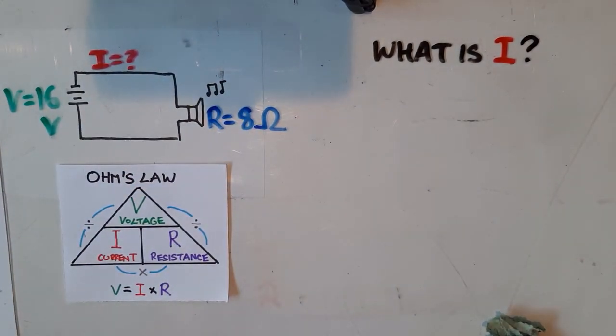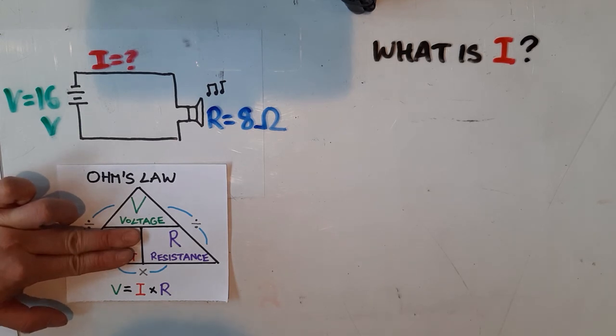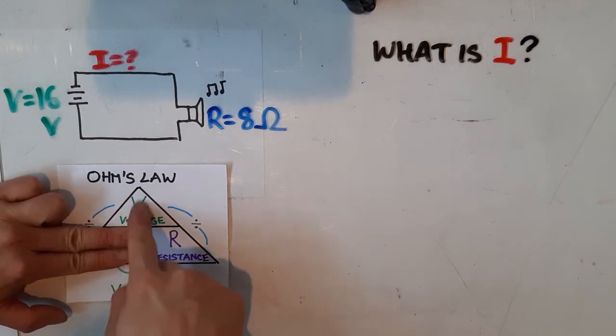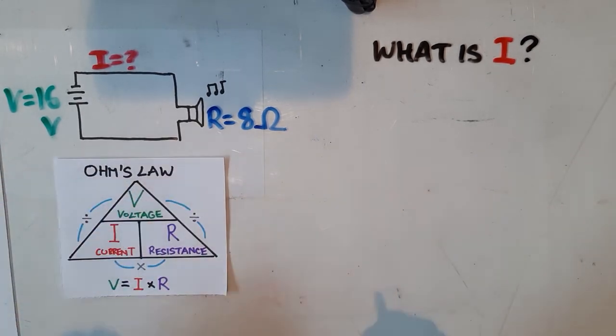So let's solve for it. Once again, I'm going back to my pyramid. Since I'm solving for current, I'm going to cover up the I, and that's going to reveal to me the formula. This time, it's voltage divided by resistance. So I'm going to write that down.